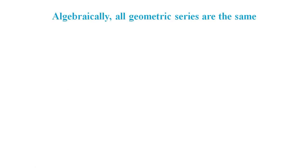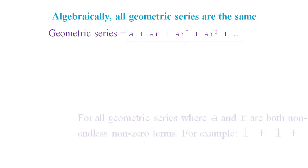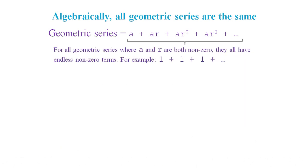Does this make sense? Well, algebraically, all geometric series are the same. So when a and r are both non-zero, every term in the series will be non-zero. Such as in the example where a and r are both 1.